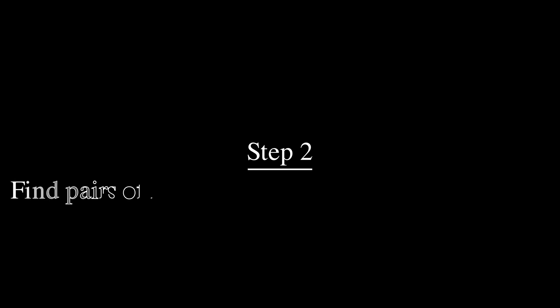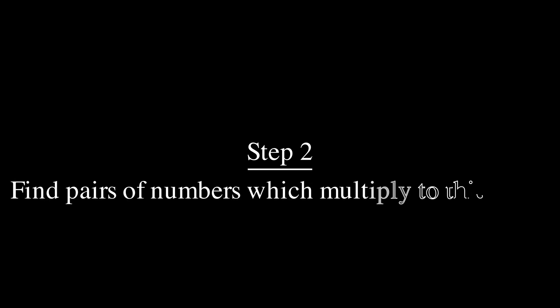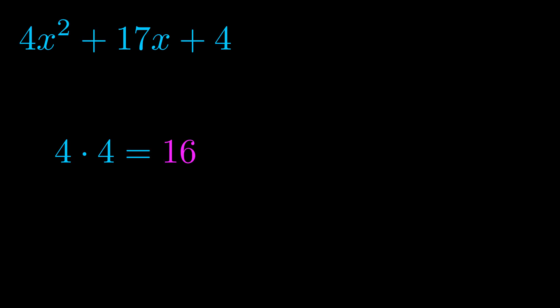Step two is to try to find all of the pairs which multiply to this number. Now it turns out you don't really need to find all of them, but go ahead and write down as many numbers as you can that multiply to the magenta value for now. Pause the video and resume when you're ready to continue.